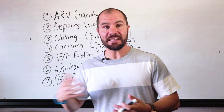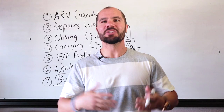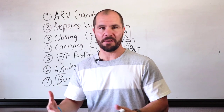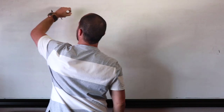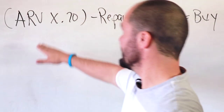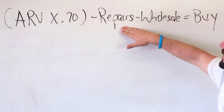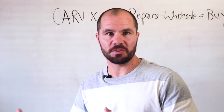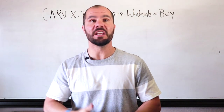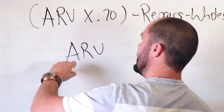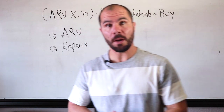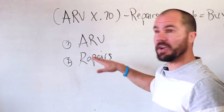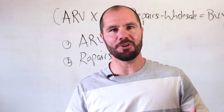People ask me all the time: is this a deal? Well, anything is a deal if you buy it right. We want to figure out what we need to get this contract for, factoring in all the other numbers, so that it's a profitable deal. Here is the formula: ARV times 0.7, minus repairs, minus wholesale fee, equals our buy price. There are two variables you have to know: ARV and repairs. Once you know those two numbers, you can calculate your maximum allowable offer, or MAO, on any deal.